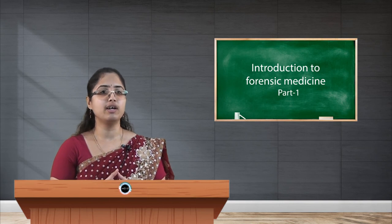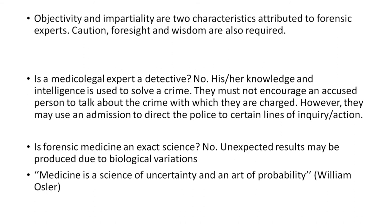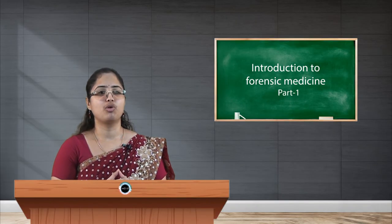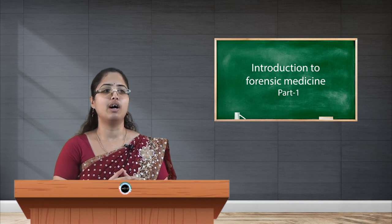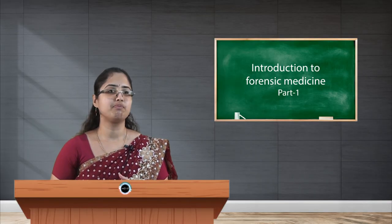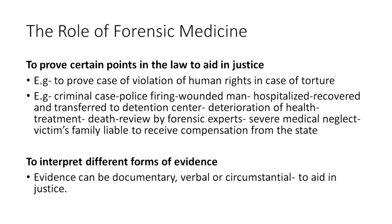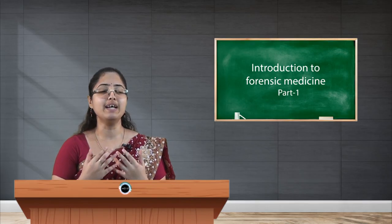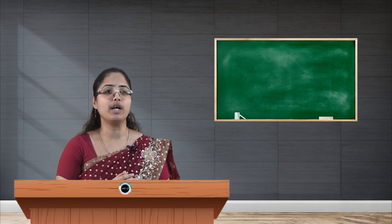Is forensic medicine an exact science? Not really, because unexpected results can arise due to biological variations, and much of the subject is practical and circumstance-dependent. As one notable statement goes: 'Medicine is a science of uncertainty and yet an art of probability.' We presume certain things to be true, but they must be proven through evidence. Forensic medicine plays an important role in proving points of law — for example, in cases involving violation of human rights — by guiding those involved and providing the necessary justice.